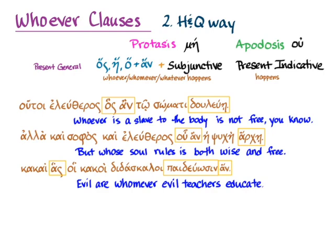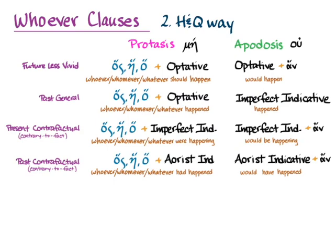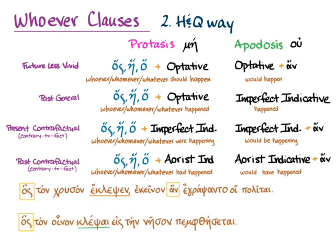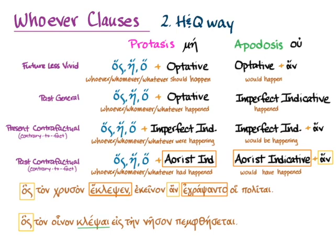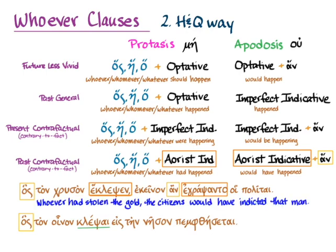Three other examples were all what Hanson and Quinn would call present general — hoss-an and the subjunctive with a present indicative in the main clause. But then we saw two that didn't have hoss-an with the subjunctive, and the other patterns will help us out. One has hoss but with the an in a separate place and without subjunctive; another has hoss but no an and no subjunctive. If we look at the verb of the first sentence, we see the aorist indicative, which also appears in the protasis of the past contrary to fact. The apodosis matches too — aorist indicative plus an — so you can use the contrary-to-fact formula: 'whoever had stolen the gold, the citizens would have indicted that man.' The Hanson and Quinn way really helps us there.